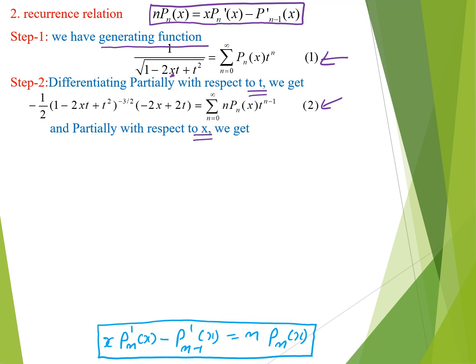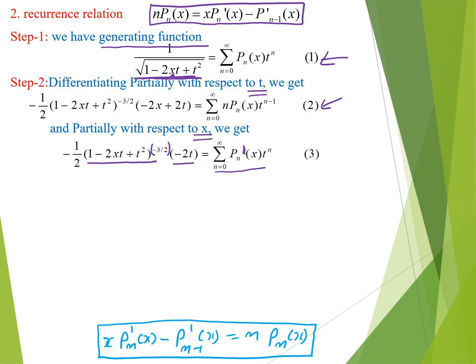When we partially differentiate with respect to x, we get the term minus 1/2 times (1 - 2xt + t²)^{-3/2} times (-2t) on the left side. On the right side, differentiating with respect to x gives summation from n=0 to infinity of P_n'(x) t^n. We then remove the term (1 - 2xt + t²)^{-3/2} by dividing equations 2 and 3.